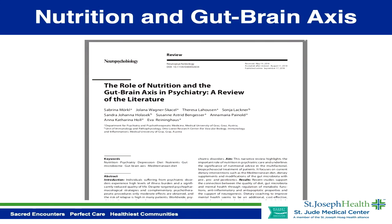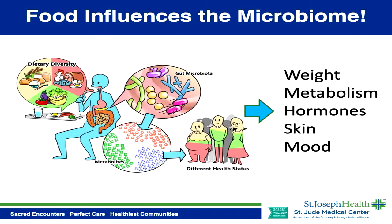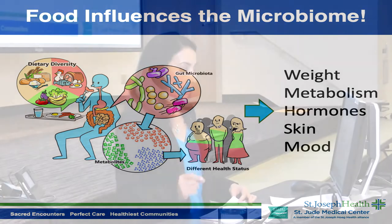A review article that came out in 2018 in the Journal of Neuropsychobiology — with a link to the full article on my website — talked about how important nutrition and the gut microbiome are for healthy mood. Science and research is now supporting the importance of the gut-brain axis. The bacteria eat what we eat, and depending on what we eat, we can influence the type of bacteria growing in our gut. The bacteria break food down into bioactive substances, and the type of diet we're eating changes the chemicals released by bacteria into our body — chemicals that determine our weight, immune system, metabolism, hormones, skin, and mood.